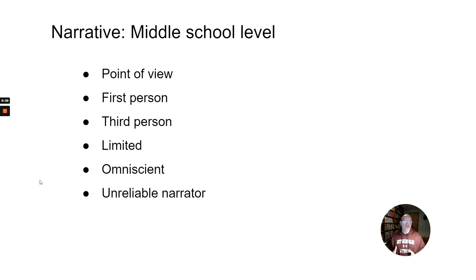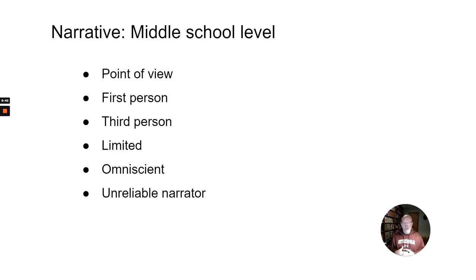Let's start with the idea of narrative. At the middle school level and really through high school, you've learned about point of view. You've learned about first person point of view, third person, and probably about limited point of view and omniscient narrator — whether the narrator knows everything or just follows one character around. And you've also probably learned about an unreliable narrator, somebody like Nick, who you can't quite trust. Those are all concepts you should be pretty familiar with.